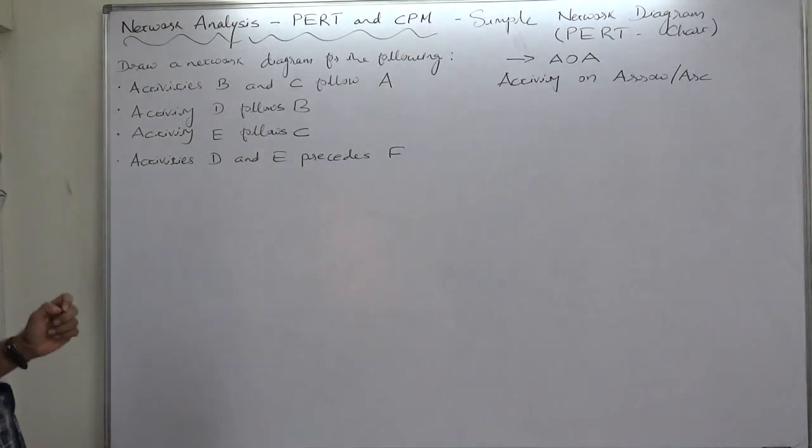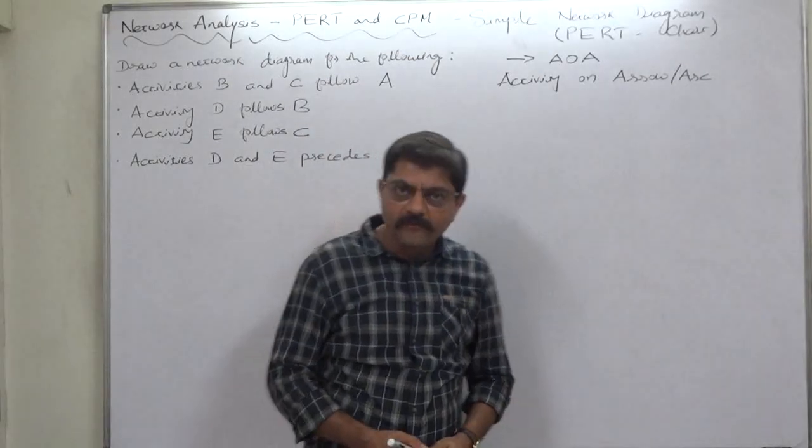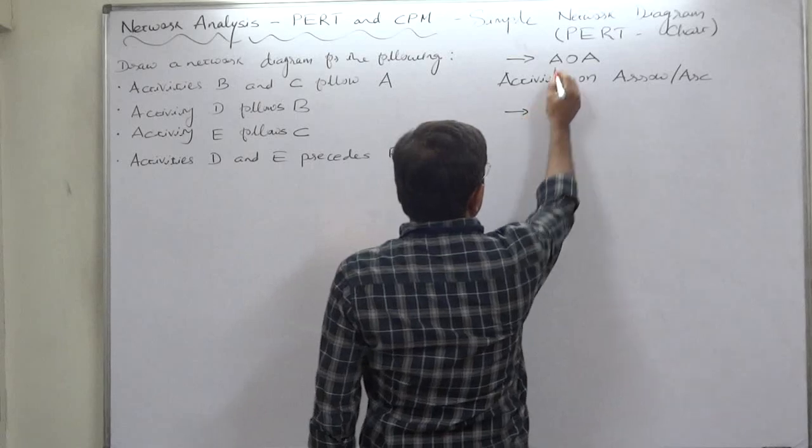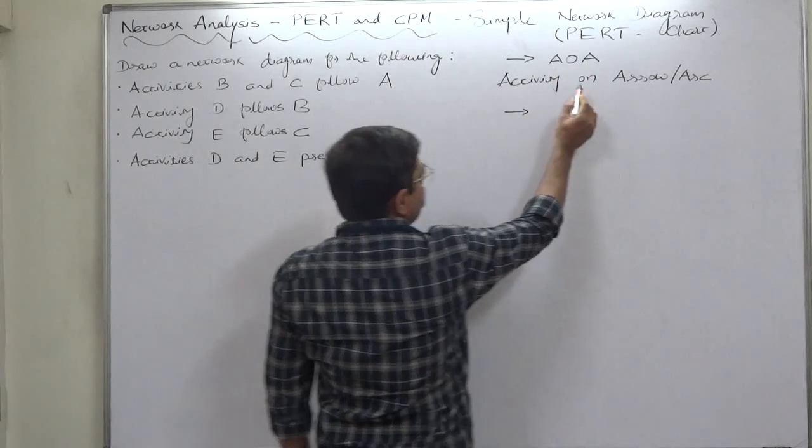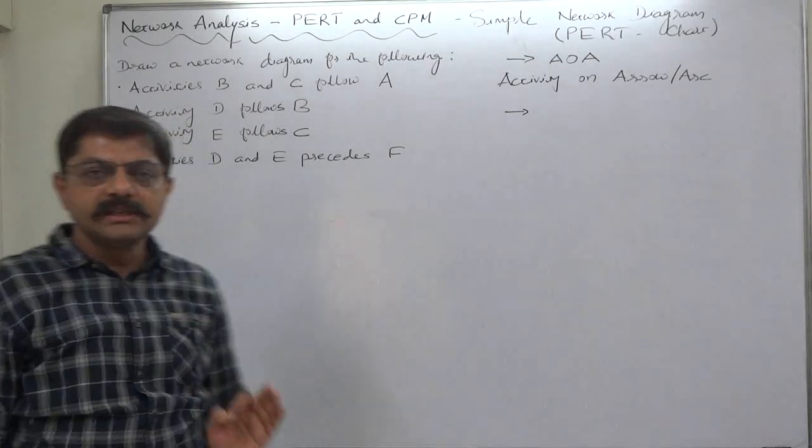Before drawing the PERT chart, I want to clear that there are two methods of drawing a PERT chart or network diagram. One, first is called AOA. Activity on arrow or arc. That means activities are represented by arrow.